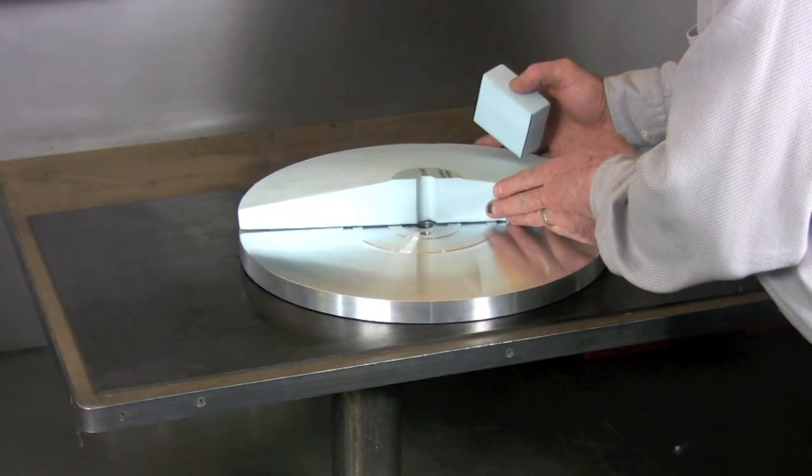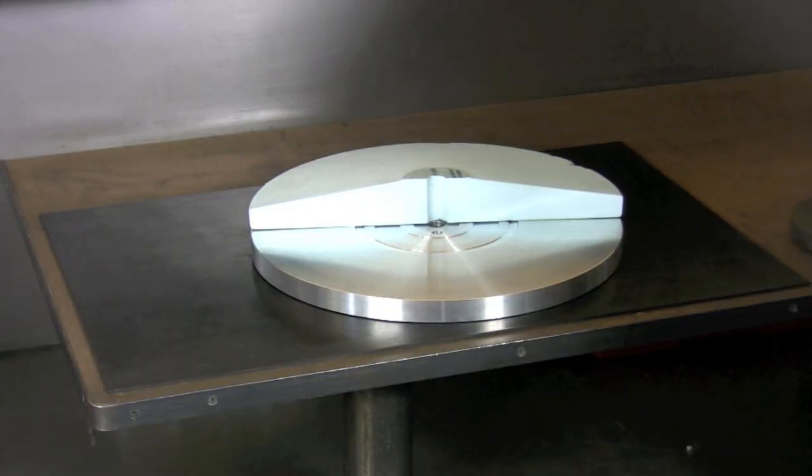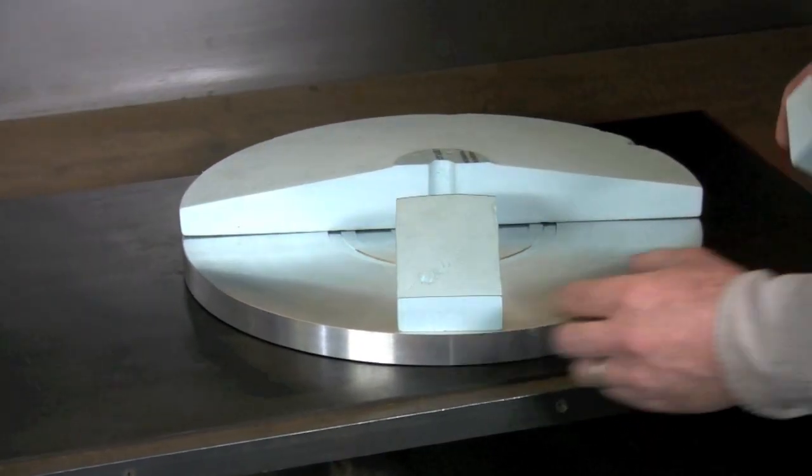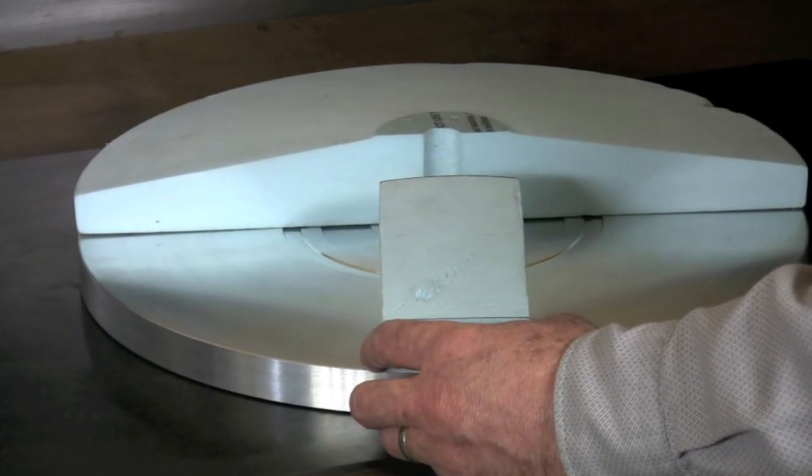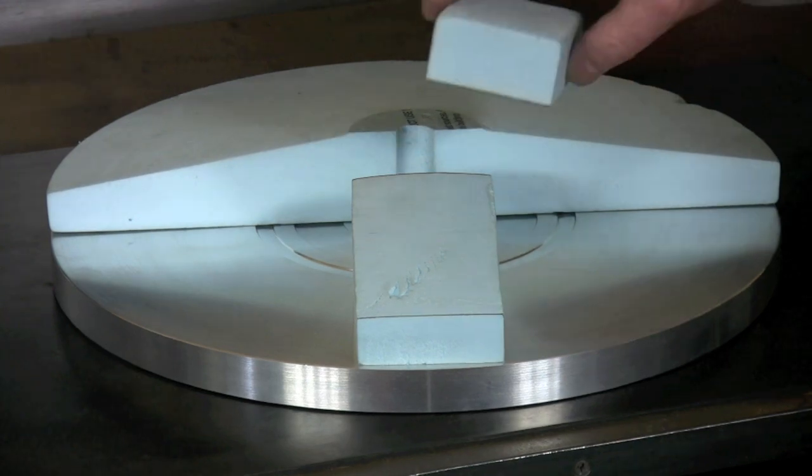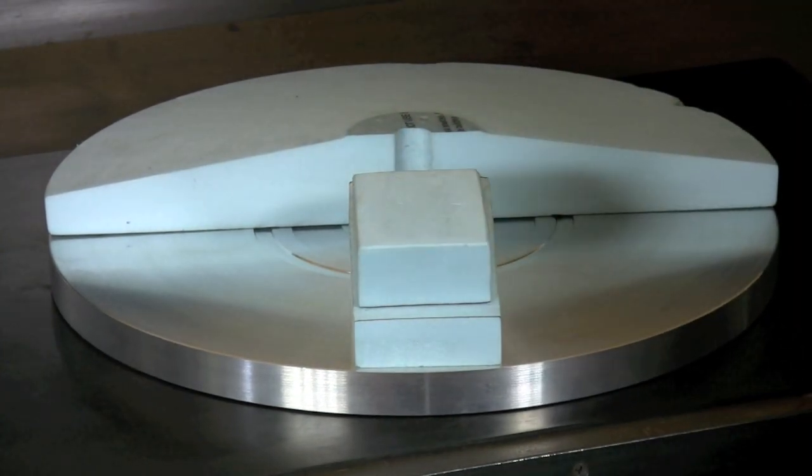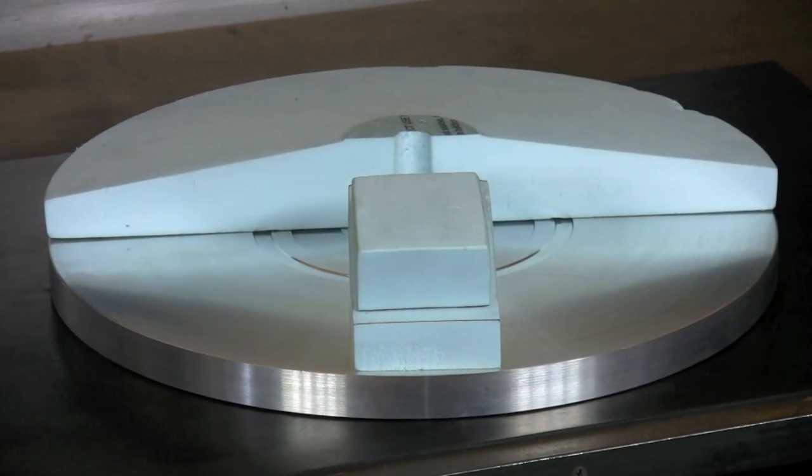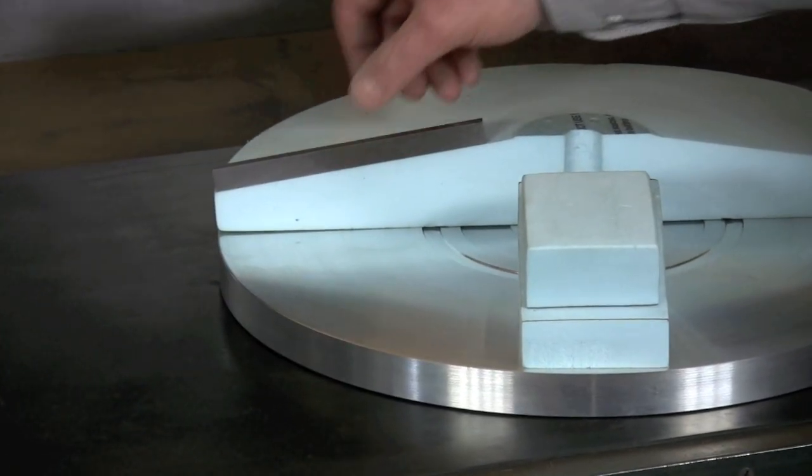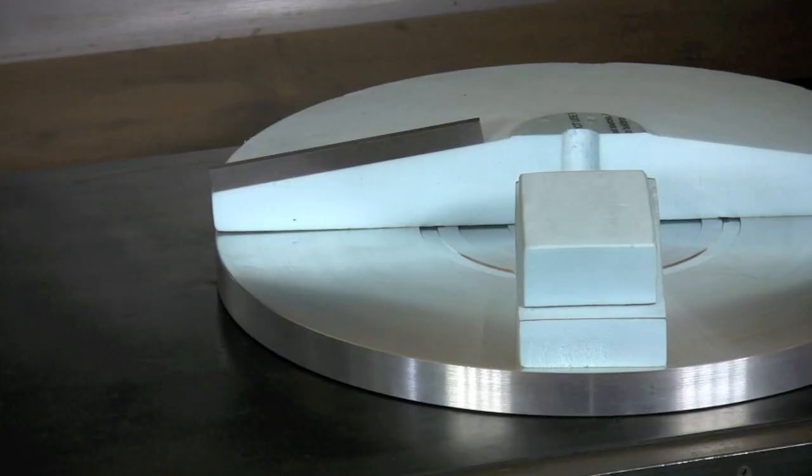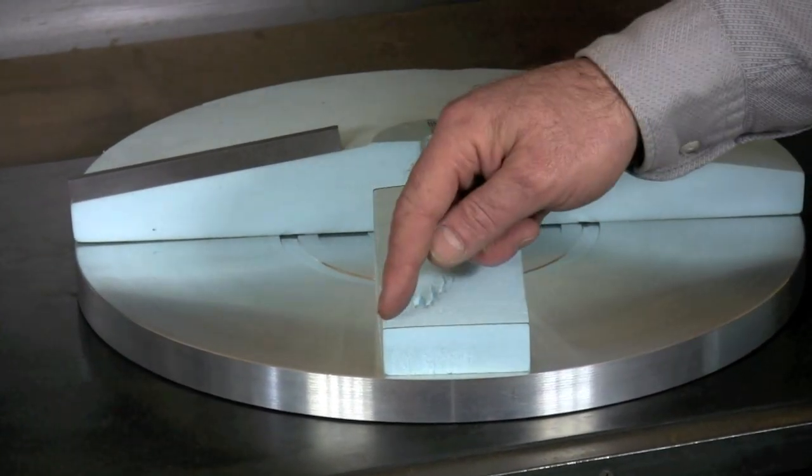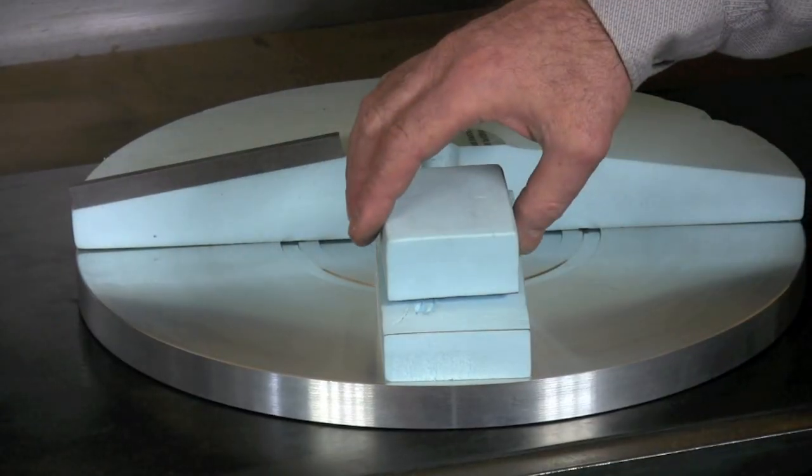This cutaway of the wheel and this section removed from the wheel to represent the area where a blade would be sharpened shows it a little better. You have the straight plane in that direction and you have the radius in that cross section.